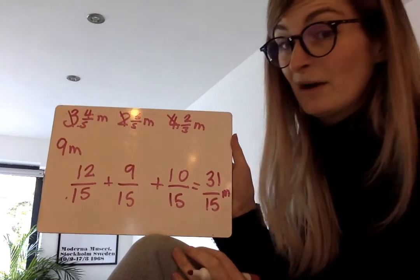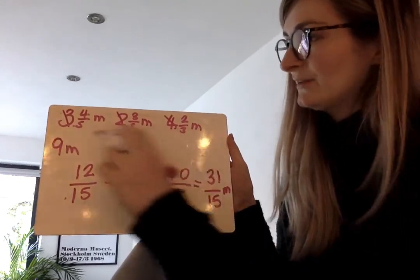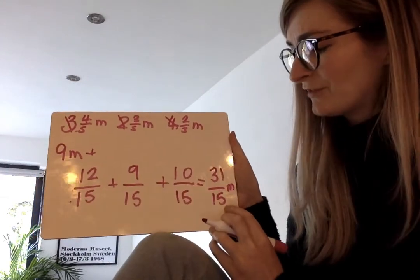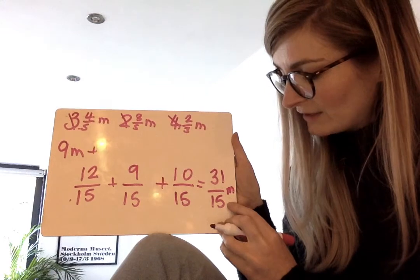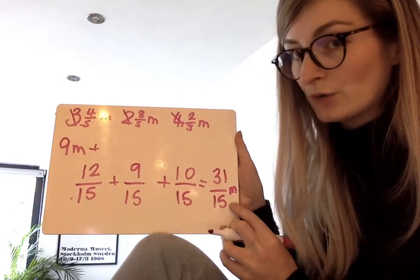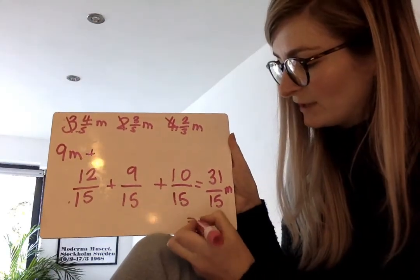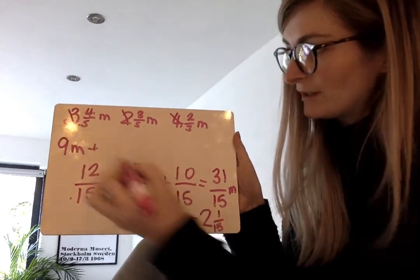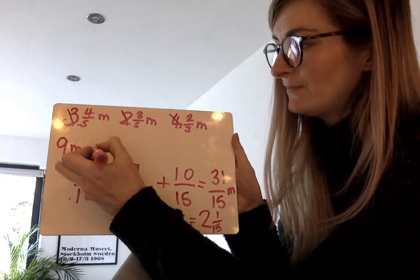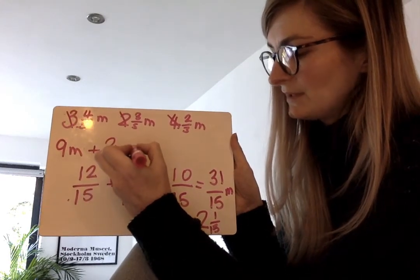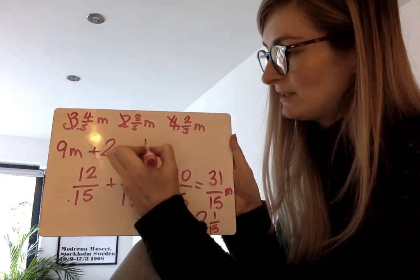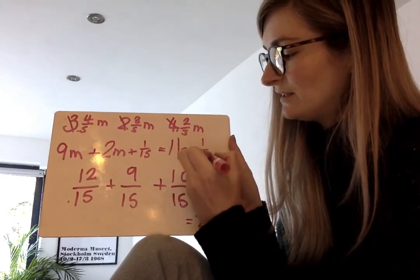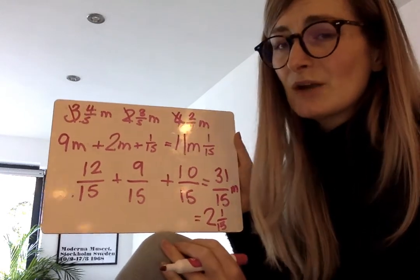We need to add this together. But also this is an improper fraction. So I would take out the 15 parts out of here. I can see I can take two wholes out of here and I'll be left with 2 and 1 fifteenths. So I'm going to put that 2 with my 9 over here. 9 add 2 metres add 1 fifteenths equals 11 metres and 1 fifteenth of a metre. Hopefully that makes sense.